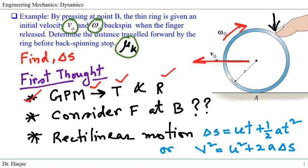The second thing to consider is whether we include the force at point B. We'll get to that shortly. To determine the travel distance — rectilinear distance — we learned those equations in Chapter 12. We can use Δs = ut + ½at² or v² = u² + 2aΔs. In either case, we're looking for Δs.